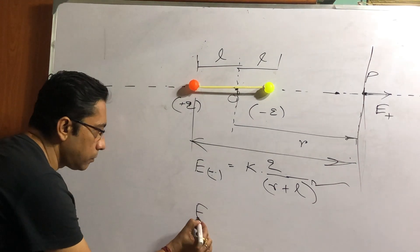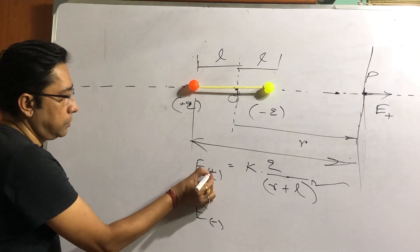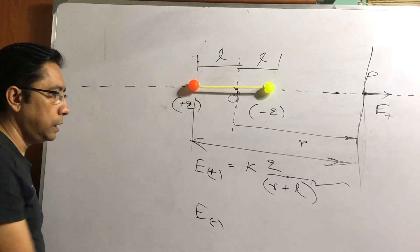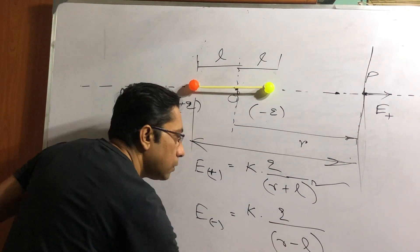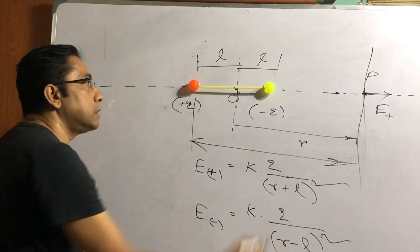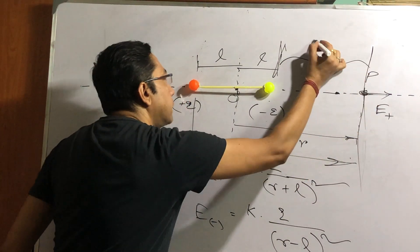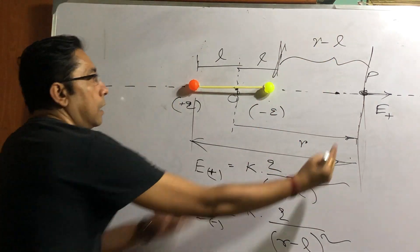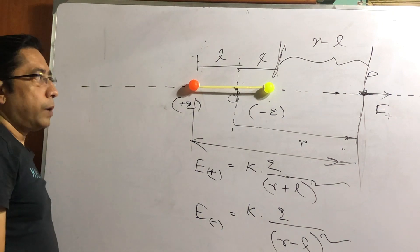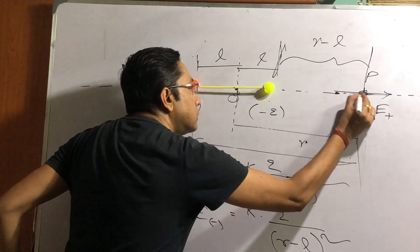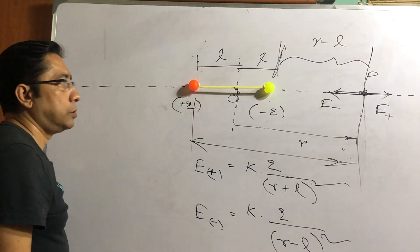Similarly, if you can understand E due to the minus charge. This was E due to the plus charge. E due to the minus charge would be given by in similar manner: KQ by (R minus L) whole square. Because the distance of point P from this negative charge is this much, and that is nothing but R minus L. This distance. But its direction would be towards the charge. So this would be E due to the negative charge.